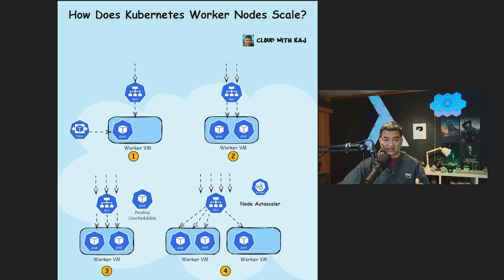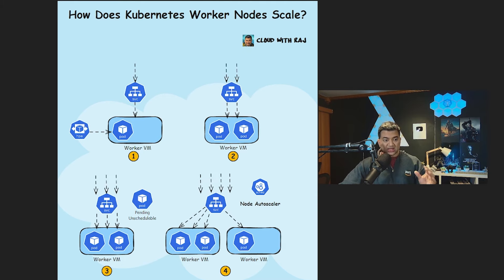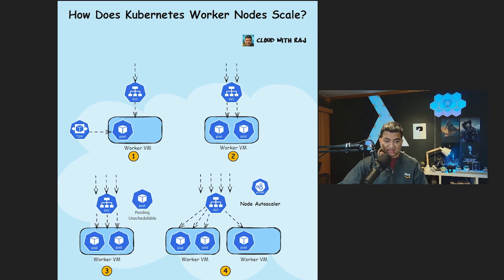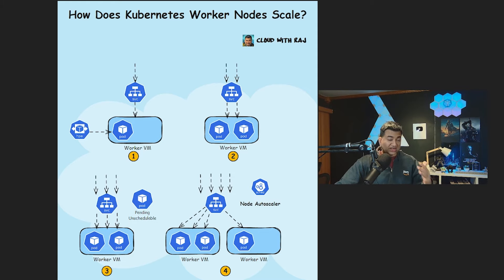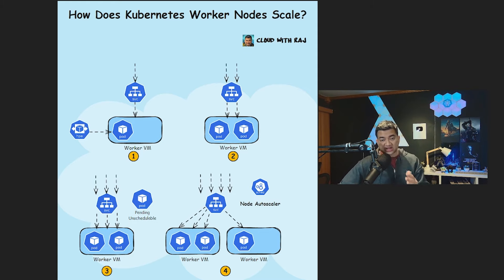The first question most candidates get wrong is: how does Kubernetes work and how do nodes scale? Candidates answer like they are scaling a regular virtual machine — they say 'I would just set up an autoscaling group scaling at a particular CPU or memory of the virtual machine.' You think you are giving the right answer, but that is not at all how Kubernetes node scaling works.